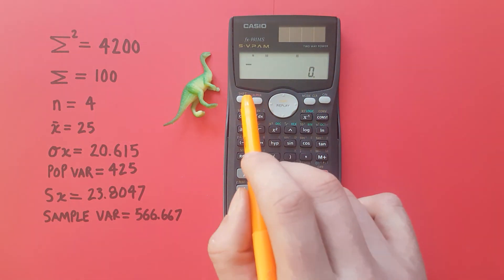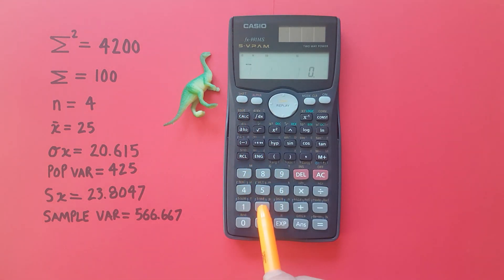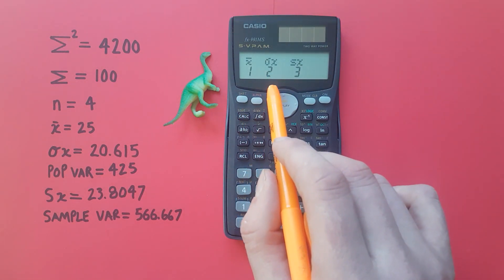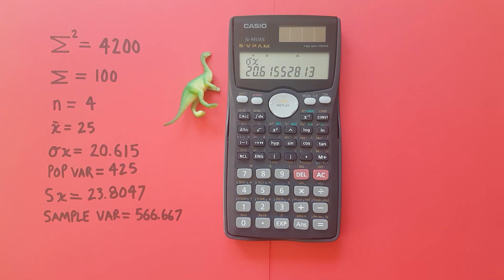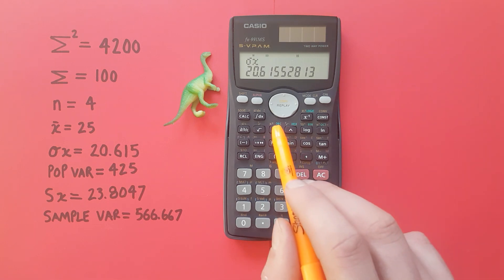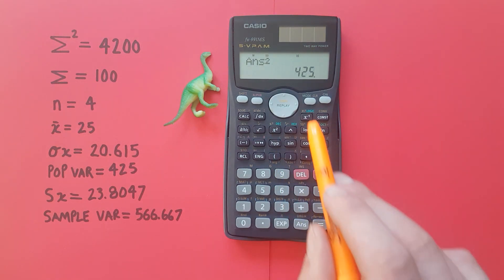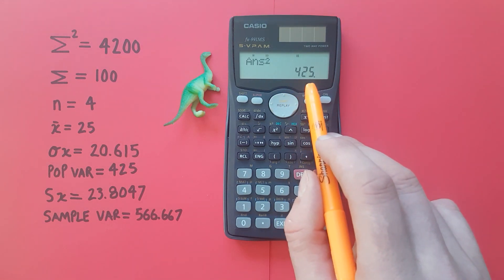Our next statistic if we press shift 2 is small sigma x or population standard deviation. So if we select that, equals, we get a population standard deviation for our data set of 20.6155 etc. And we can also get the variance of this data set by squaring that and getting a population variance of 425.